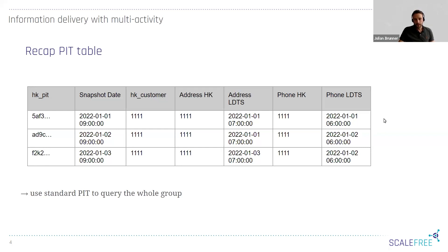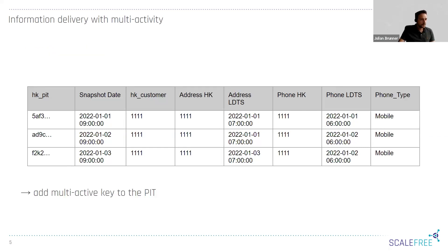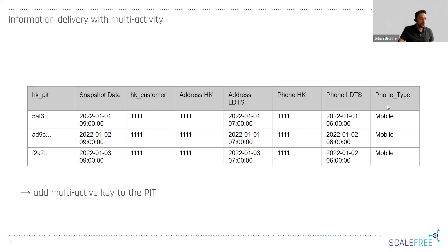To extend the standard PIT table for multi-active satellites, we need to add the multi-active attribute to the PIT structure. In the multi-active satellite, a single record is identified by the parent hash key, the load date timestamp, and the multi-active attribute. So we extend the phone satellite reference by adding the type code. Which record you want to see is essentially a business rule — in this example, we assume we want to see the mobile phone number.